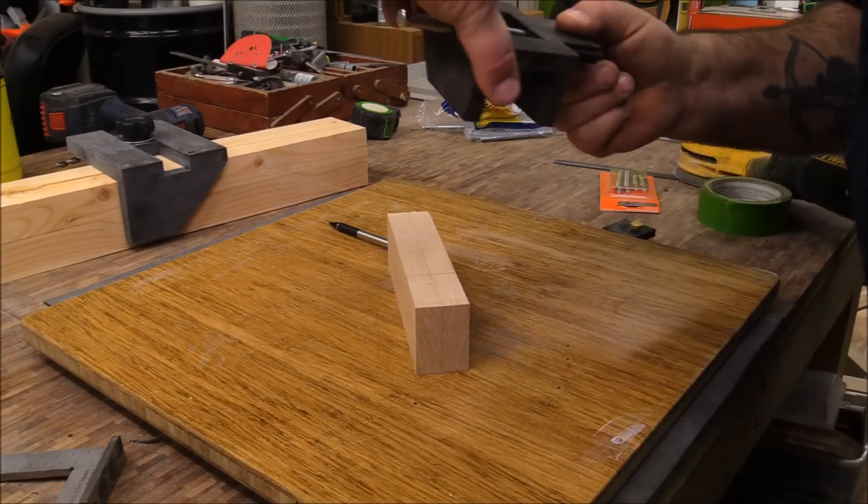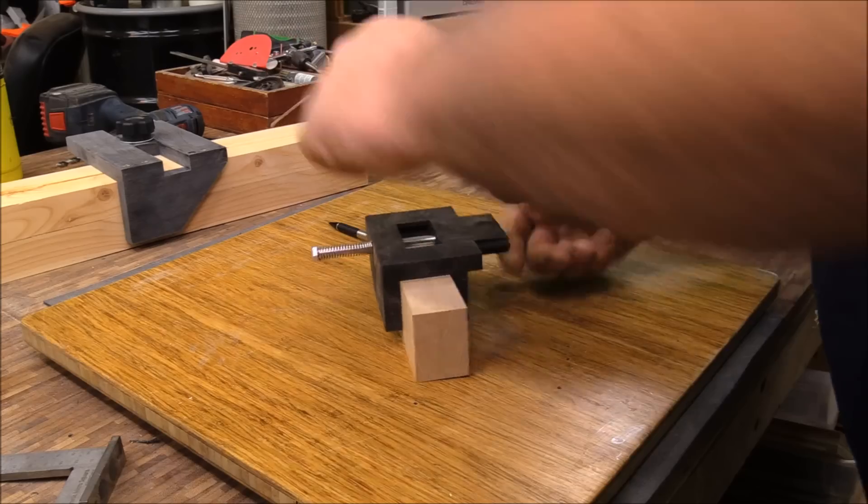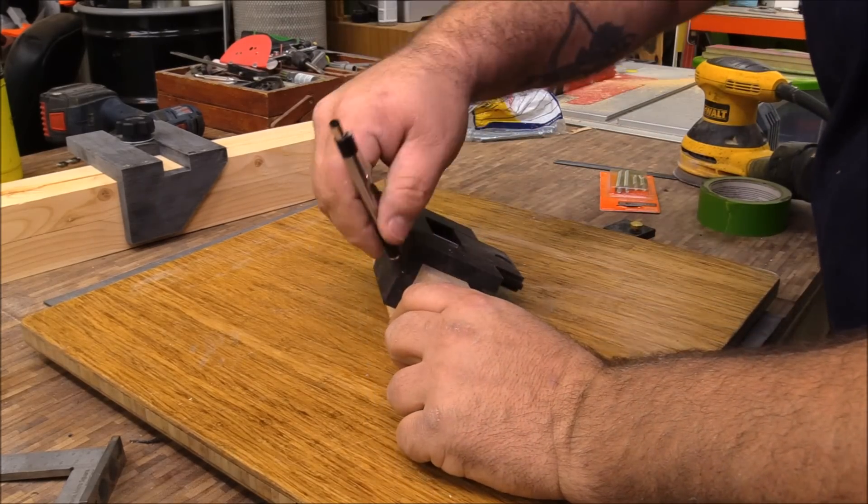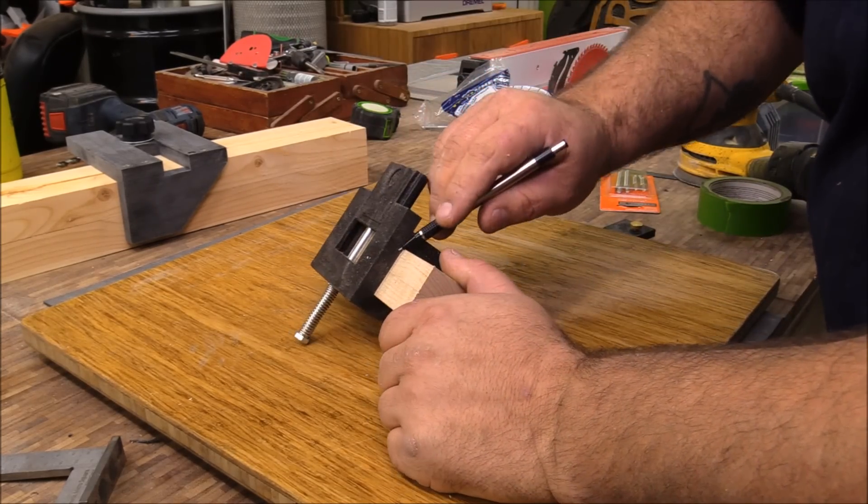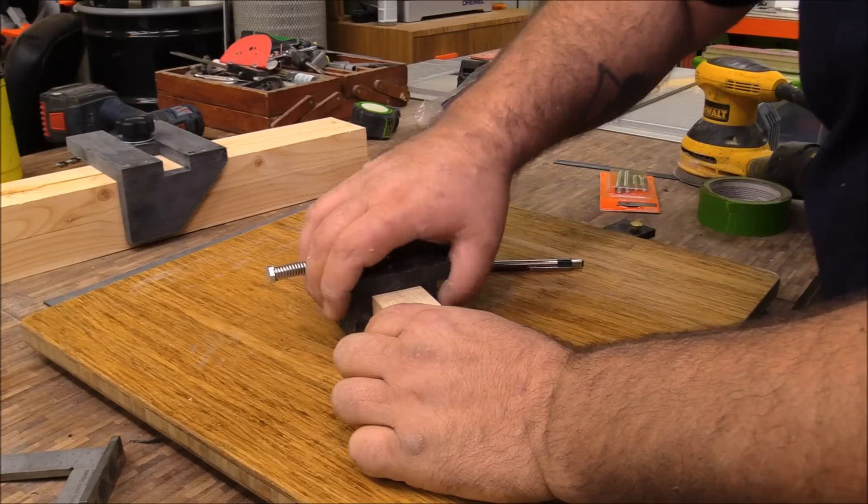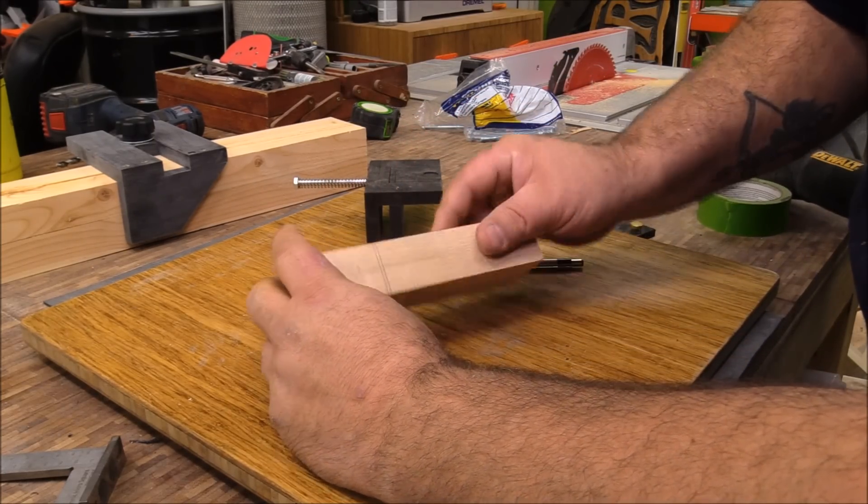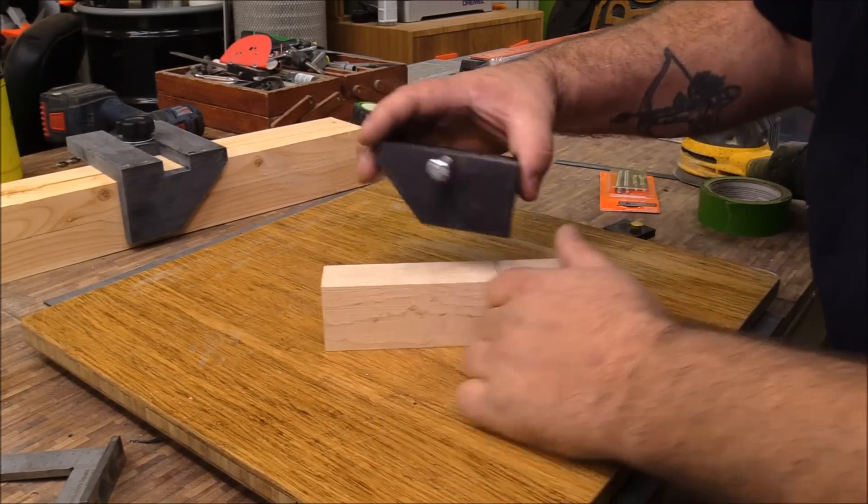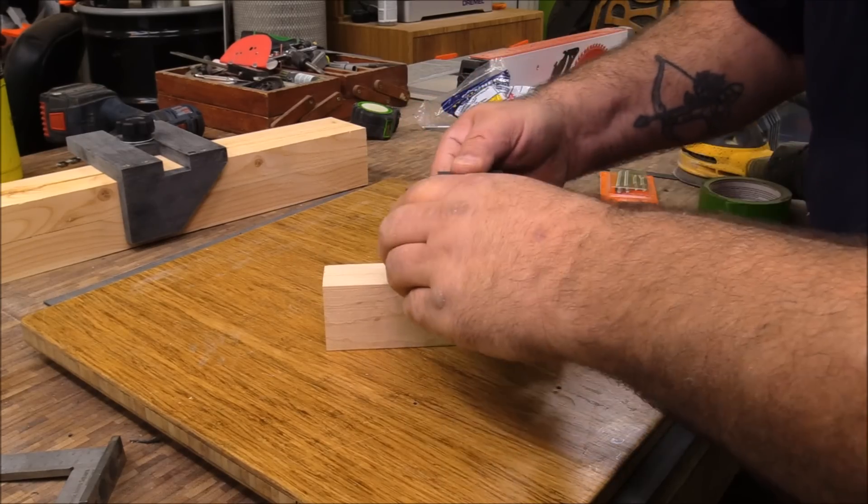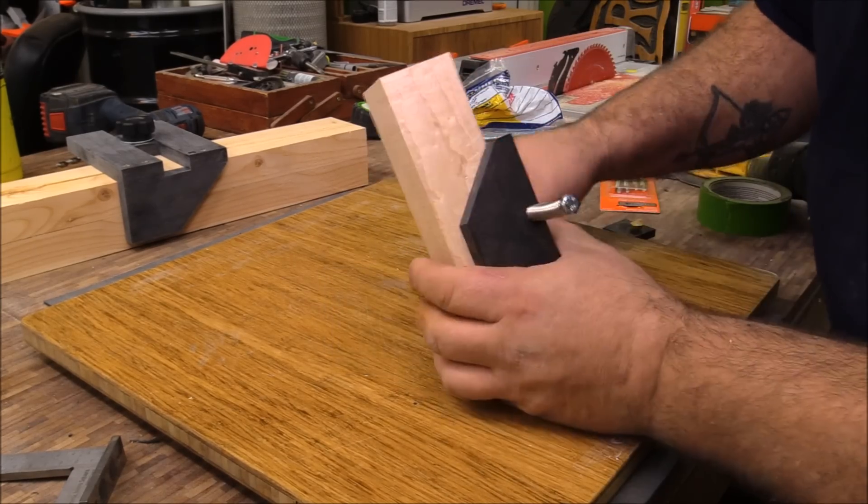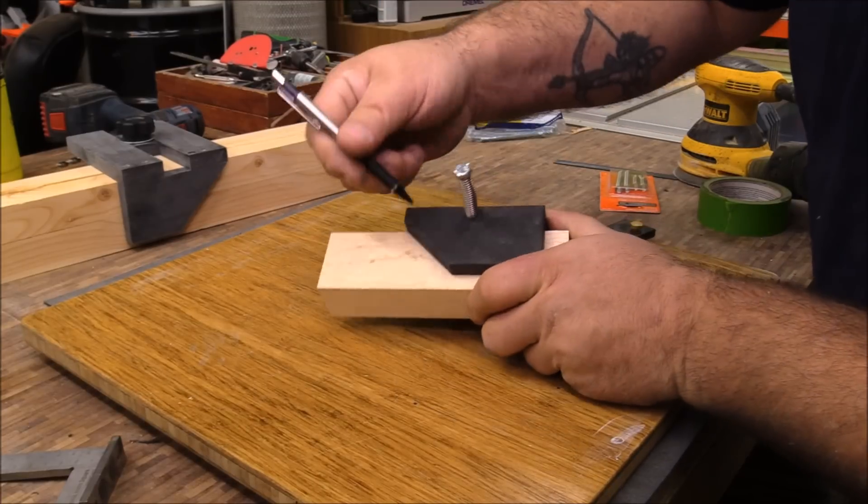Now if you don't know what a straddle square is, it is a tool that simply slides over a piece of wood you're working on and you can draw a line from one side to the other and get perfect accuracy and precision all the way across. Typically you'd use a regular square, draw a straight line, then try to match it up on either side which can be time-consuming and a bit of a pain.